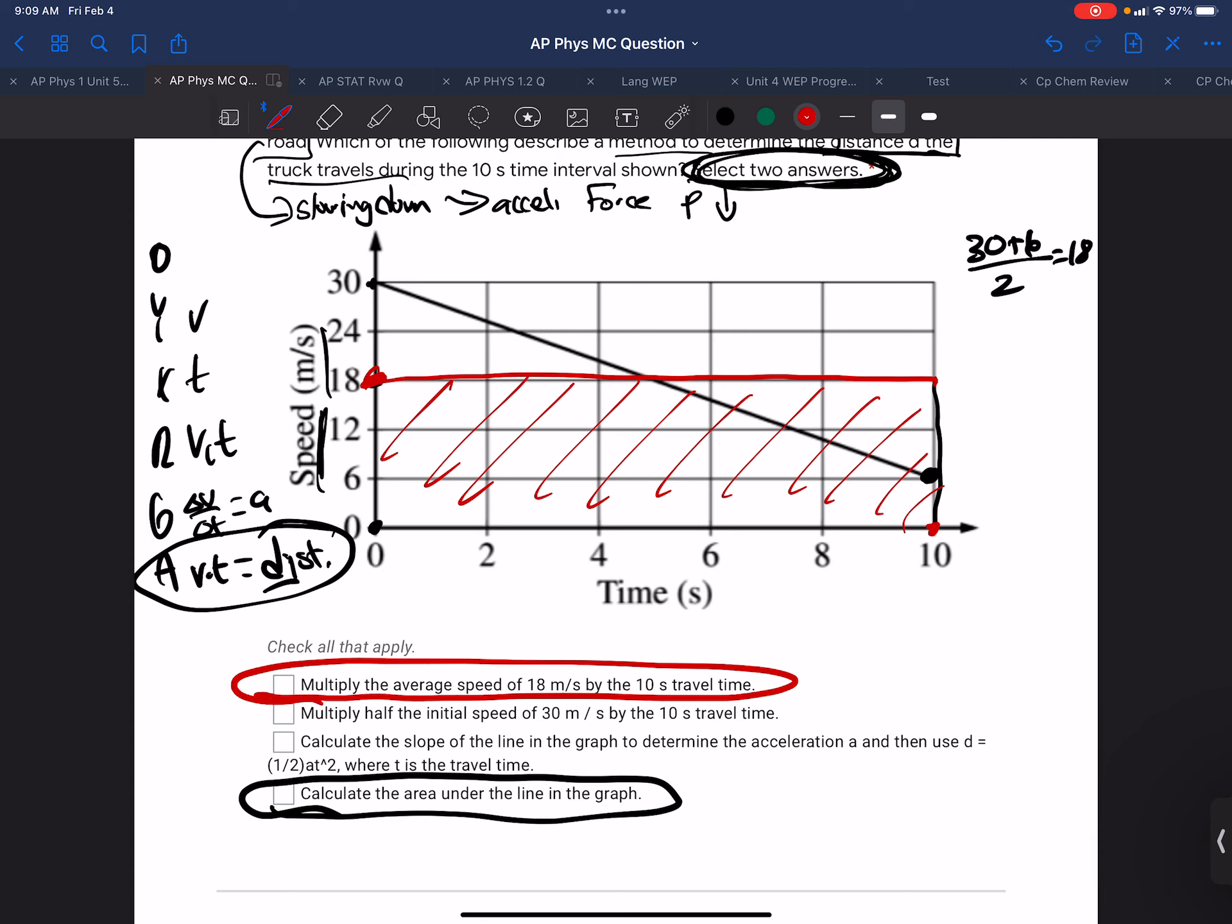Multiply half the initial speed by the 10 seconds. Well, half the initial speed isn't the average speed. The implication of that one is that no matter what the slope of this curve is, if we took one half the initial speed times the 10 seconds, it would give us the same distance. And we can see that multiplying by half the speed can't possibly be it, because the motion curve could have been any one of these three. Doing that would give us the same answer no matter what the graph is. So that can't be a choice.